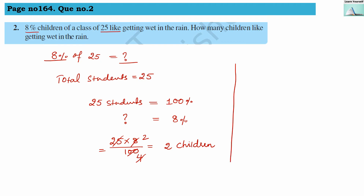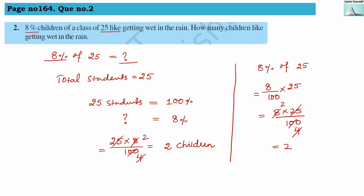Another method: 8% of 25. Converting percentage to fraction: 8 divided by 100, of means multiplication with 25. So 8 into 25 divided by 100. Since 25 fours are 100 and 4 twos are 8, we get 2. So 2 children got wet in rain.